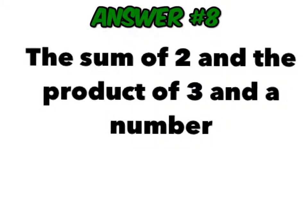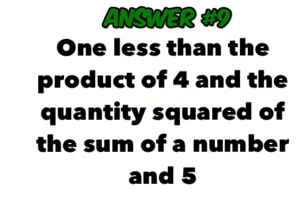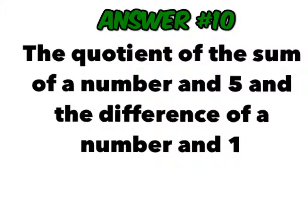Number 8: The sum of 2 and the product of 3 and a number. Number 9: One less than the product of 4 and the quantity squared of the sum of a number and 5. Number 10: The quotient of the sum of a number and 5 and the difference of a number and 1.